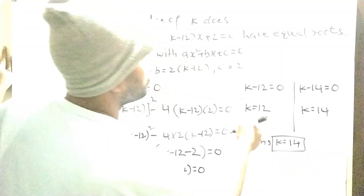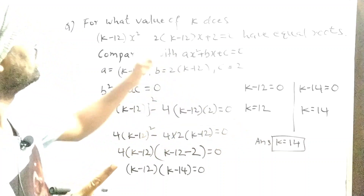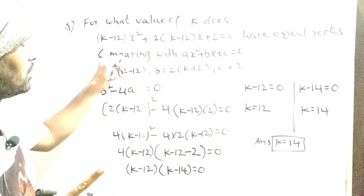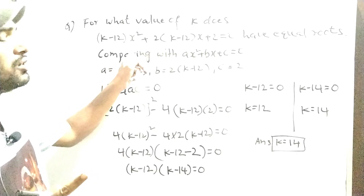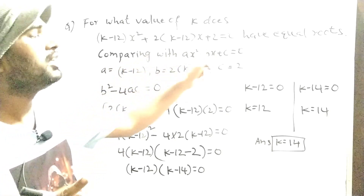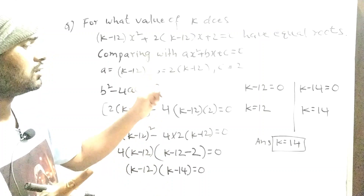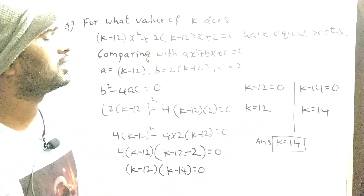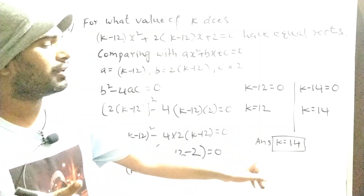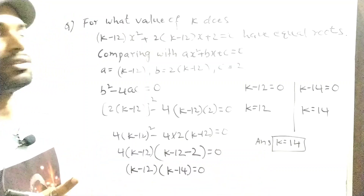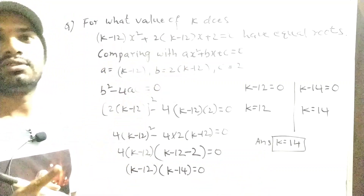k equal 12 is not our answer. If we substitute k equal 12 in this equation, 12 minus 12 is 0, so 0 into x squared makes it a linear equation — that's why we are not taking 12 as the k value. We will take k equal to 14 only, because our equation is a quadratic equation.